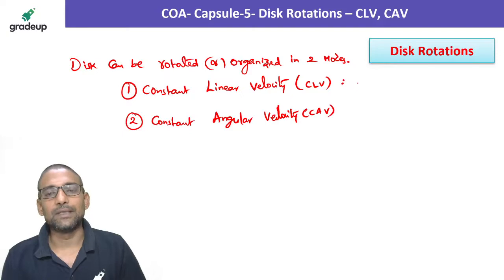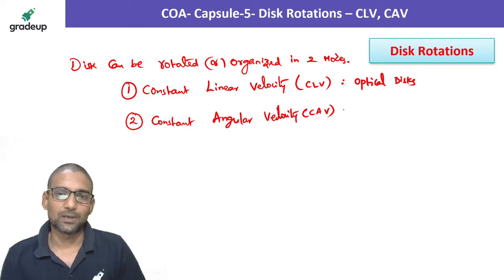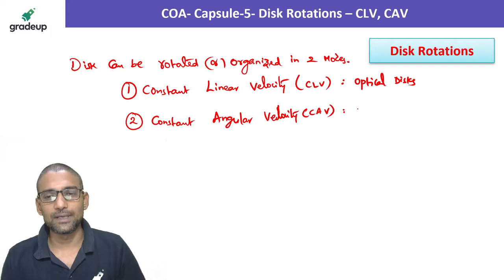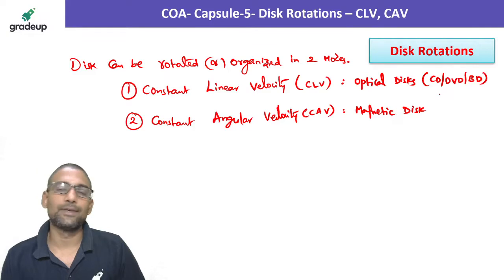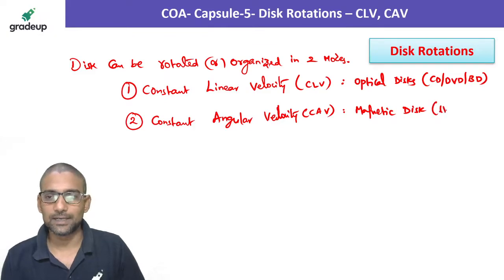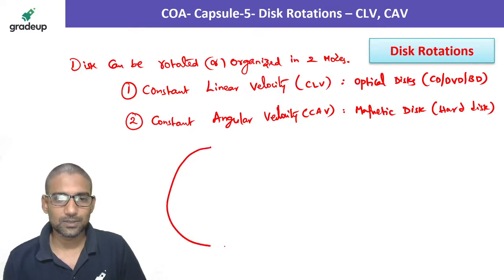CLV is used in optical disks — CD, DVD, Blu-ray — and also in floppy disks. CAV is used in magnetic disks, that is, hard disks.